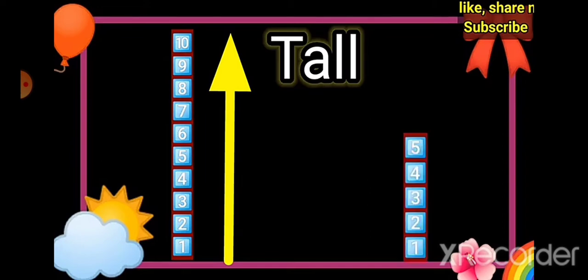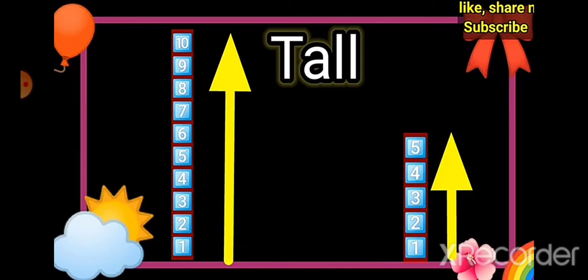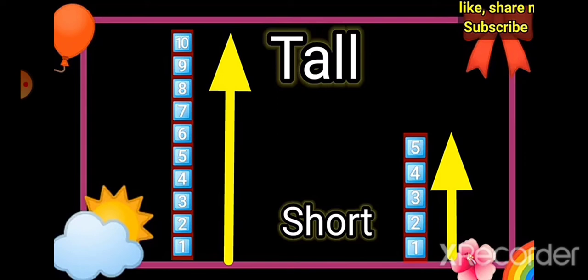Now look at this. This star is short. Let's count the block. 1, 2, 3, 4 and 5. So this is short. You can see the length of this block is short. Say short.